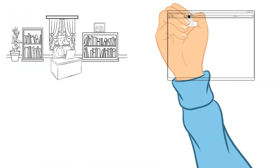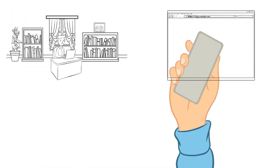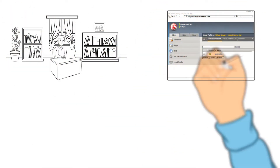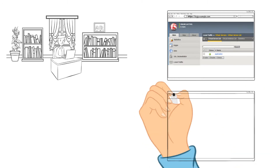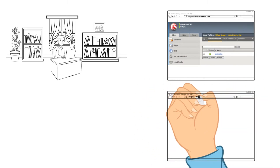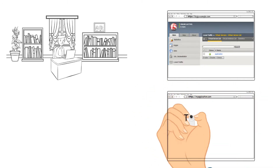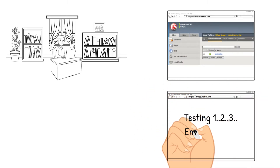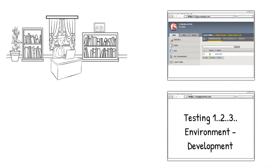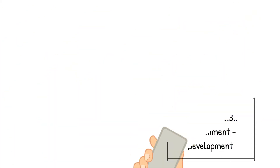You are configuring an application to be proxied through the BIG-IP. You just saved the last objects to create your configurations and tested the application in development. And now you need to recreate the configurations in production.